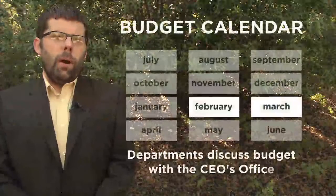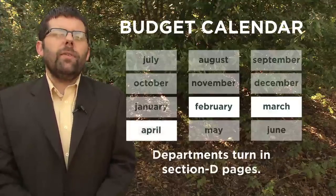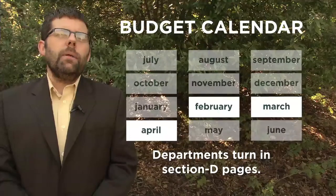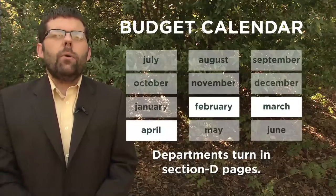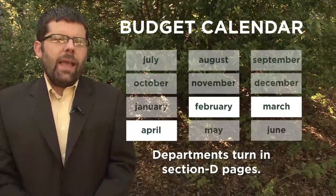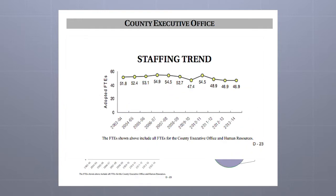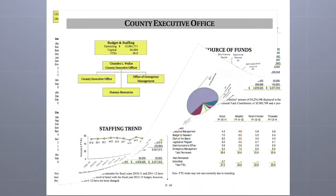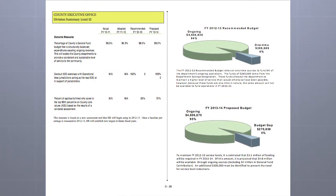From the middle of February until March, the departments discuss their budget with the CEO's office. In April, the departments turn in their final pages for the D section of the budget book. The D section makes up the bulk of the budget book and provides the public and the Board of Supervisors with a detailed accounting of each department's goals, objectives, programs, resources, staffing, and recurring performance outcomes. The first page of each department section provides an organizational chart, information on the number of full-time employees, the source of funding, and how those funds are used. The following pages are more detailed, showing how the department's overall budget is allocated to specific divisions or programs for previous and future years.